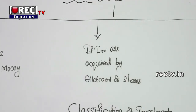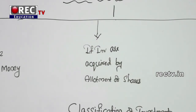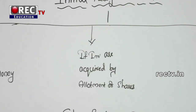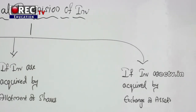Second, if investments are acquired by allotment of shares or securities, then the investment value should be recognized at the fair market value of the shares or securities issued. Whatever is the fair market value of the securities you issue to acquire the investment is treated as the value of that investment.